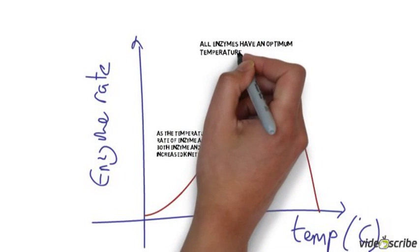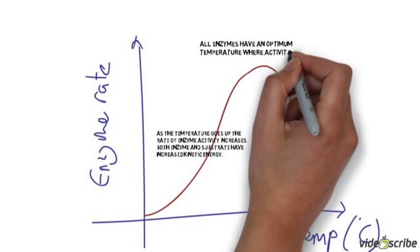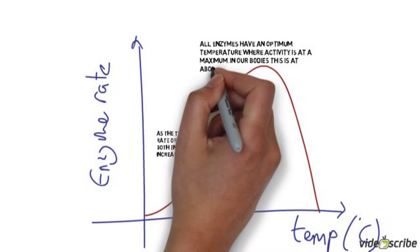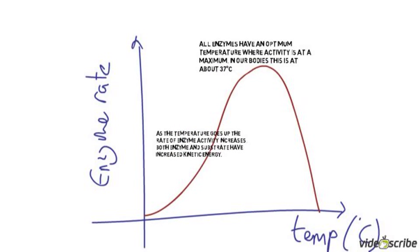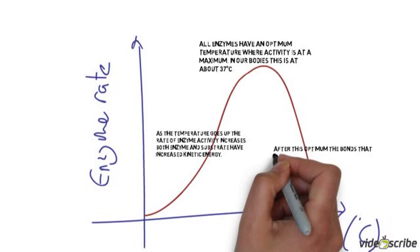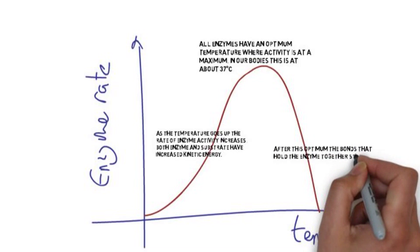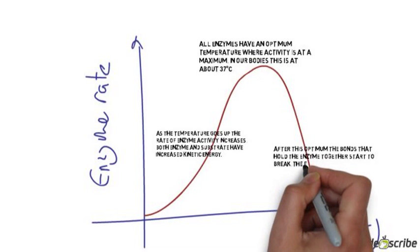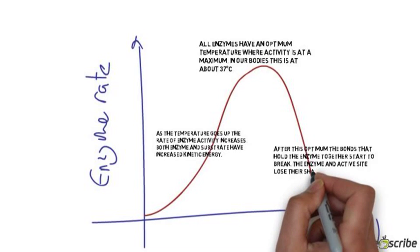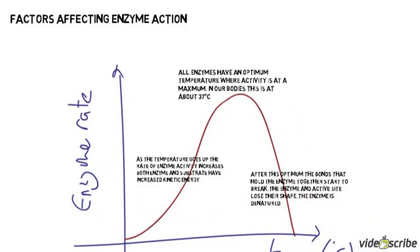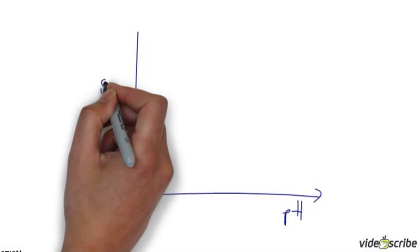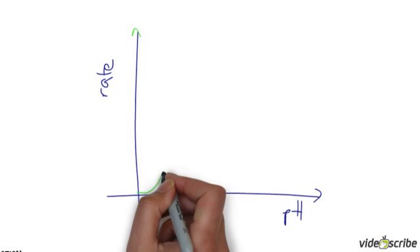This increases up to a certain point — in our body that's typically 37 degrees — and that's the optimum temperature for the enzyme. When we go above the optimum temperature, the enzyme starts to shake too much. It gets too much energy, and the bonds that hold the enzyme together start to break. Because they start to break, the enzyme changes shape, and the active site also loses its shape. We call this denaturation. A denatured enzyme no longer fits the substrate.